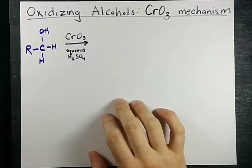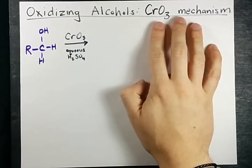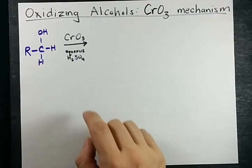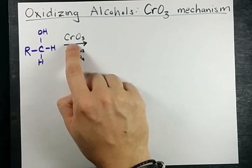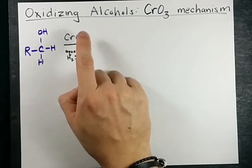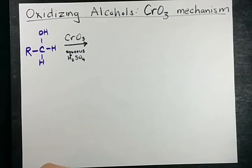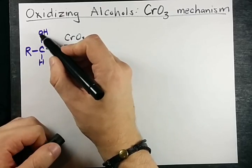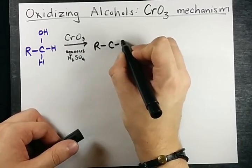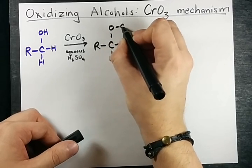There are lots of ways to oxidize alcohols, and today I'm going to show you the mechanism to oxidize alcohols with CrO₃. CrO₃ has a chromium atom in the center and three oxygens connected to it, so the chromium is a little bit delta plus. That makes it open to attack by the oxygen, and the first step of the mechanism is to have the oxygen attach itself to the CrO₃.